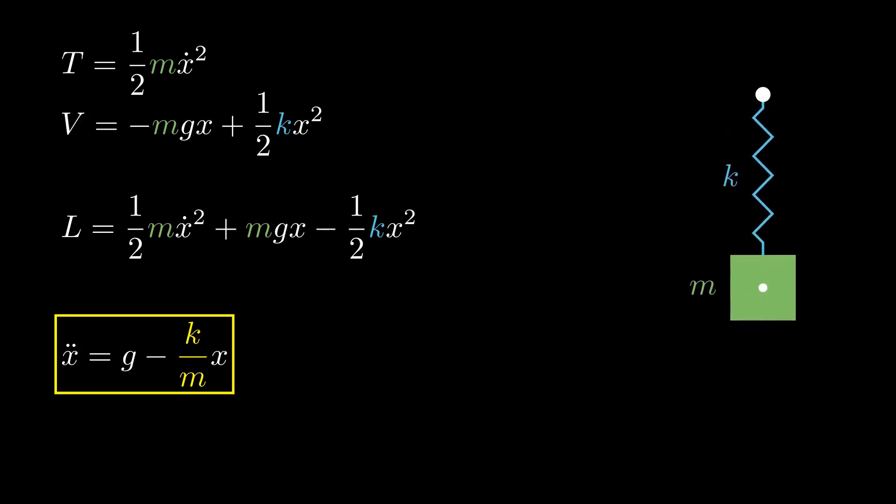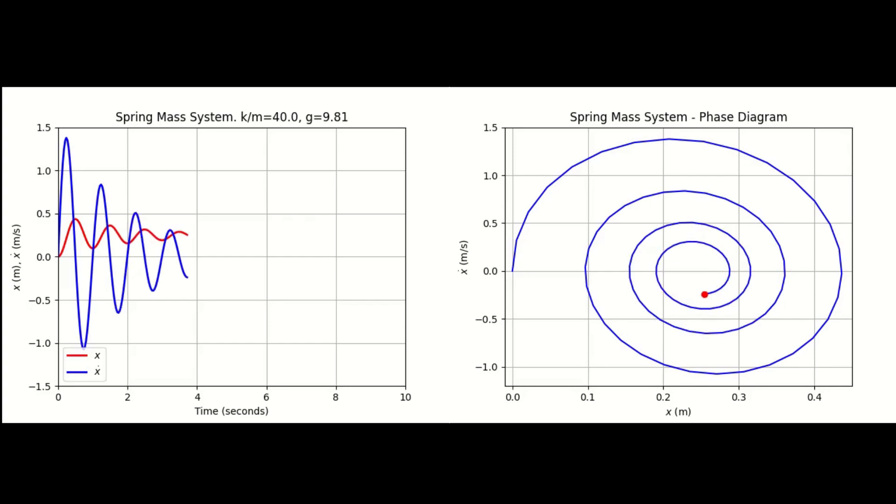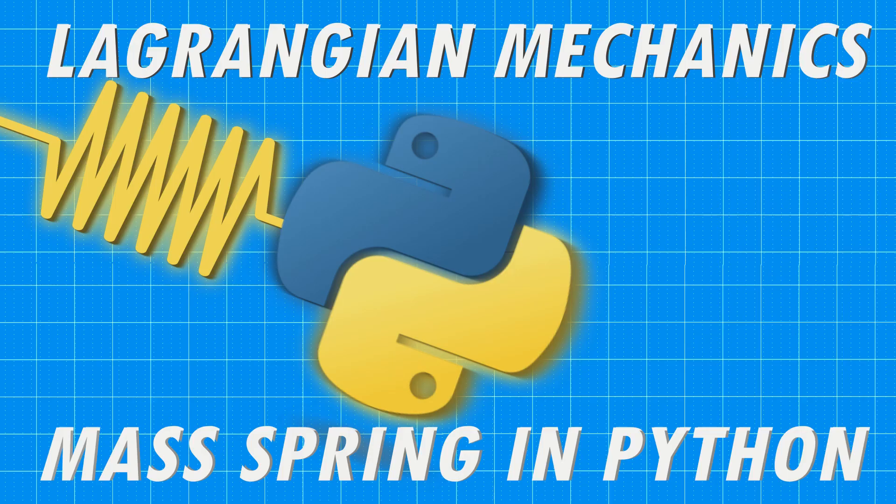Today we're going to learn how to model and simulate a spring mass system in Python, with and without friction. Then we'll create some animated plots and discover what this spiral has to do with a spring. I'm Logan and I hope you learned something new.